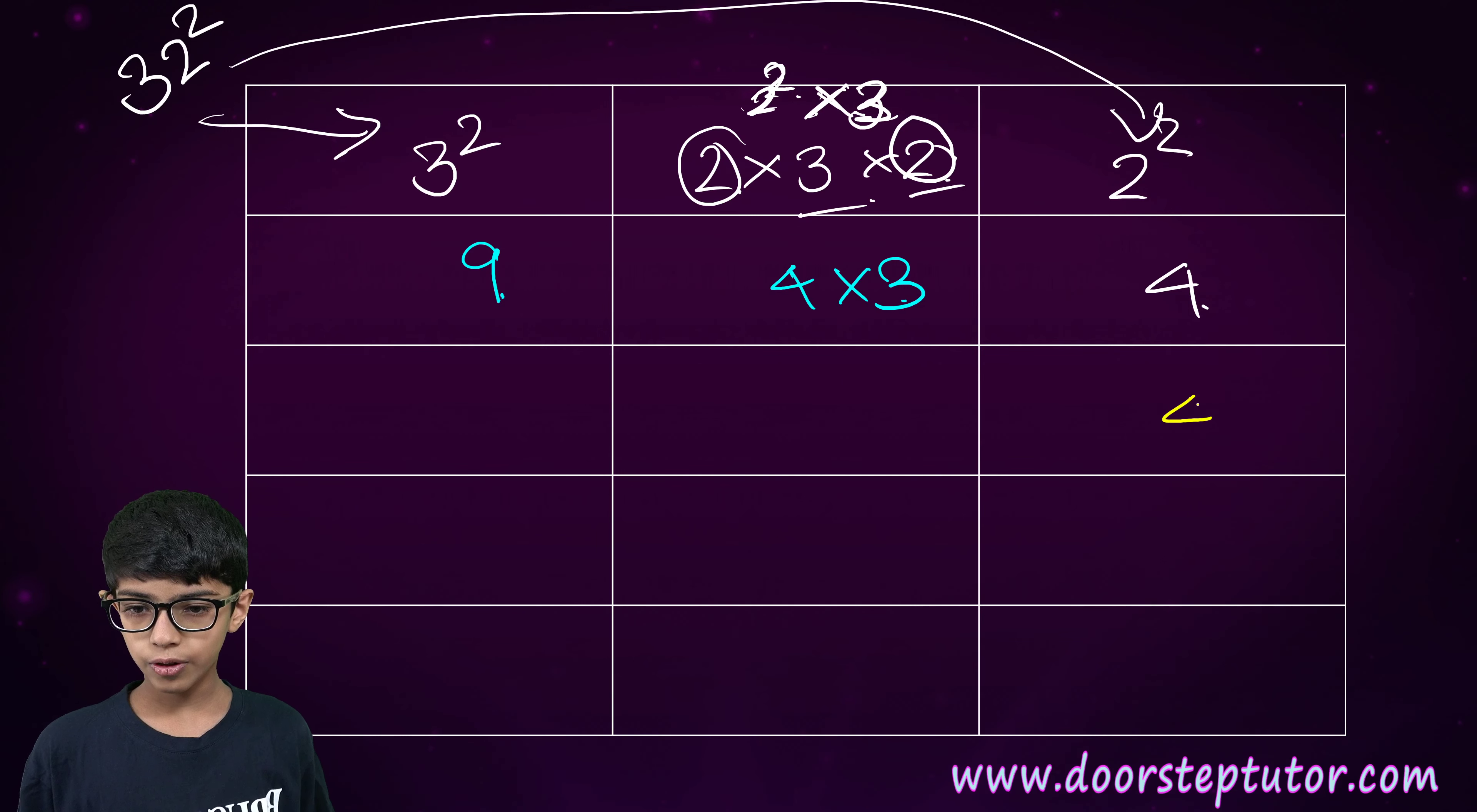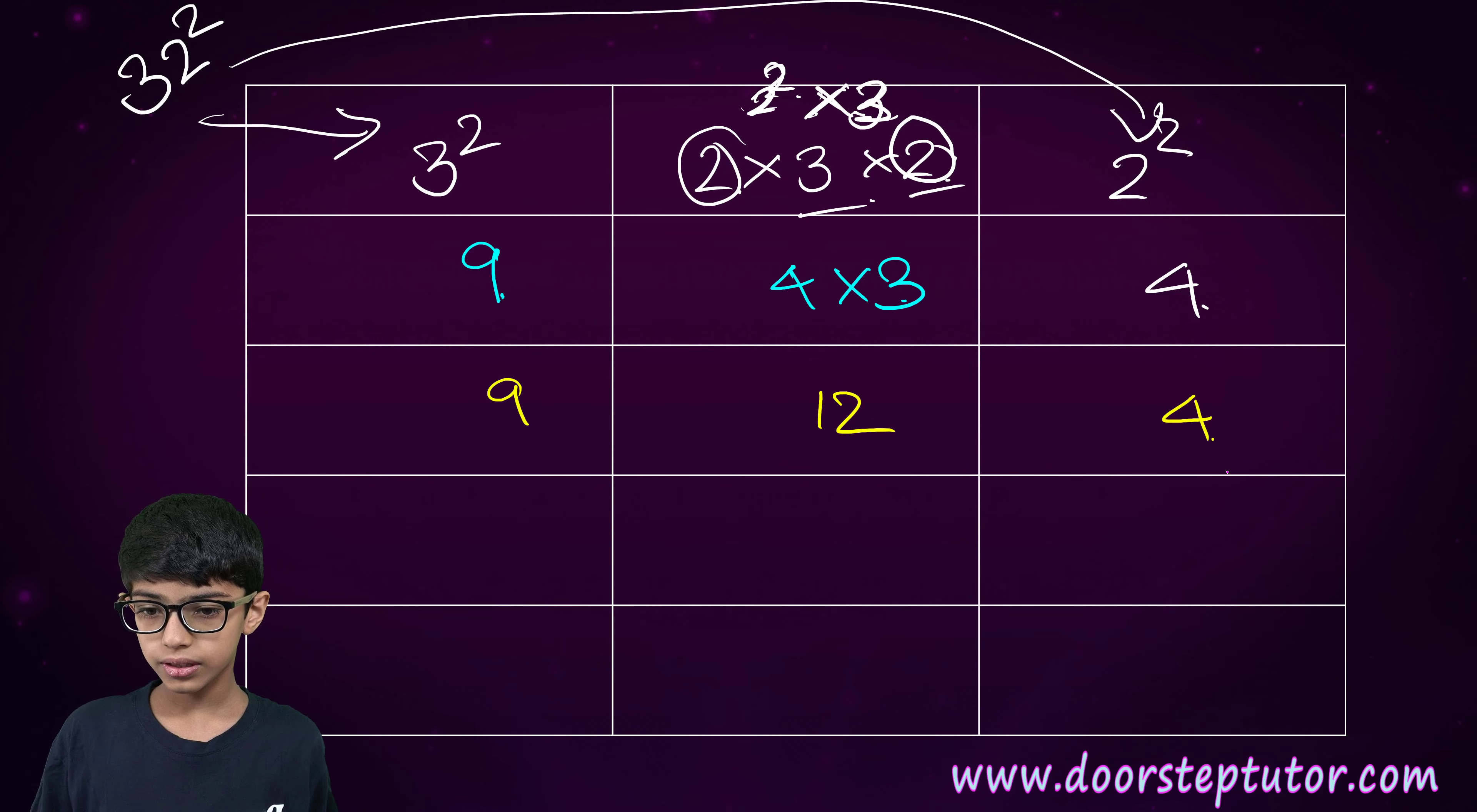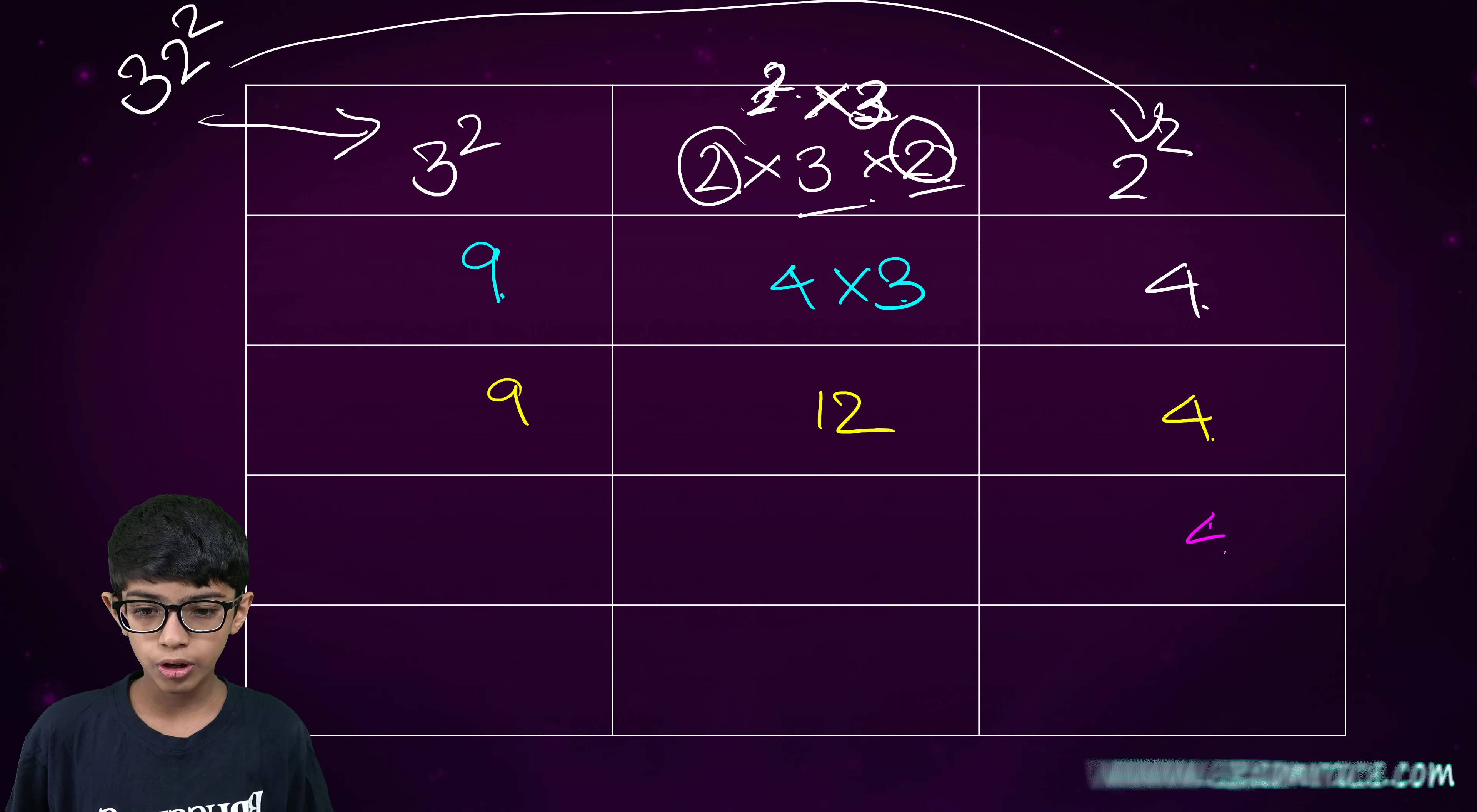Next, four will come as it is. Four into three is twelve. And nine. Next, four will come as it is.